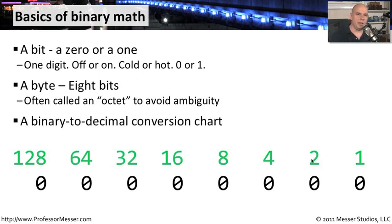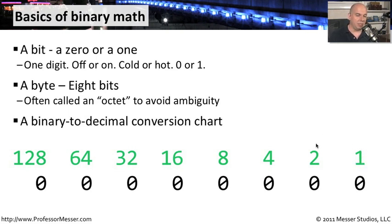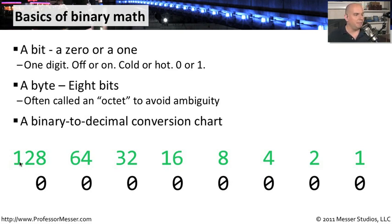One of the easiest ways to understand this conversion is to build a conversion chart. We've put eight bits at the bottom, and above each bit I've created a decimal conversion. We start with the number one on the far right side, then double it: 2, 4, 8, 16, 32, 64, and 128. We can keep going — 256, 512, 1024, and so on. This decimal conversion chart is what we'll use to take binary numbers and convert them into decimal.